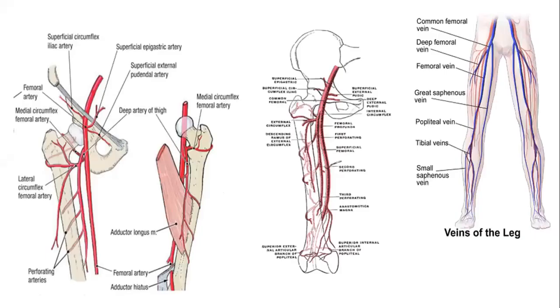Next topic: after the femoral nerve, we have femoral vessels. Femoral vessels include the femoral artery and femoral vein. Starting with the femoral artery, the femoral artery is the main arterial supply for the region of the thigh.